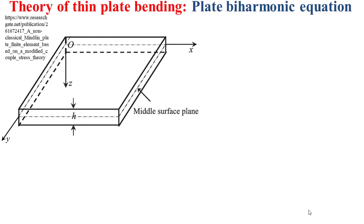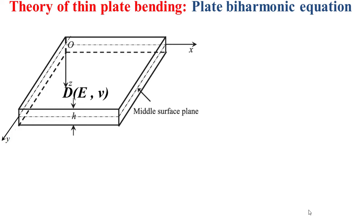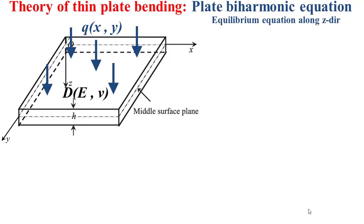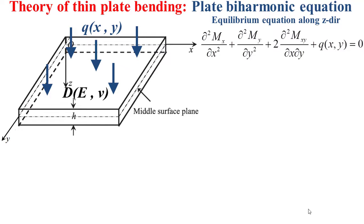Let's consider a plate as depicted in this slide. This plate has a thickness h, and the middle surface of this plate is in the plane defined by the directions x and y. The mechanical properties of this plate are summarized by the flexural rigidity denoted D, expressed in terms of the Young's modulus E and the Poisson's coefficient nu. When I apply an external loading q on this plate, we can obtain the equilibrium equation along the z-direction in terms of the bending moments mx and my, the twisting moment mxy, and the external loading q, as indicated by the formula in this slide.